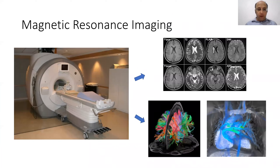Our lab is focusing on magnetic resonance imaging, which is an imaging technology used in clinical routine by hospitals to characterize human bodies. We can generate structural information, like the images you see on the top right panel of this slide, but we are also interested in generating functional information, characterizing the fiber tracts in the brain or the blood flow within the cardiac cycle, among other applications that we can use MRI for.